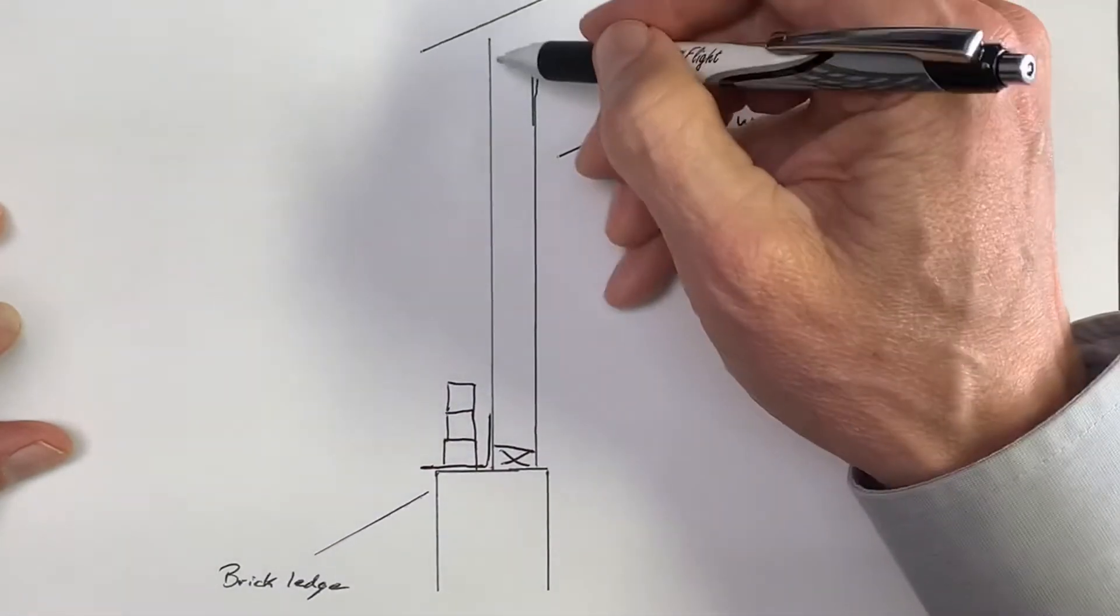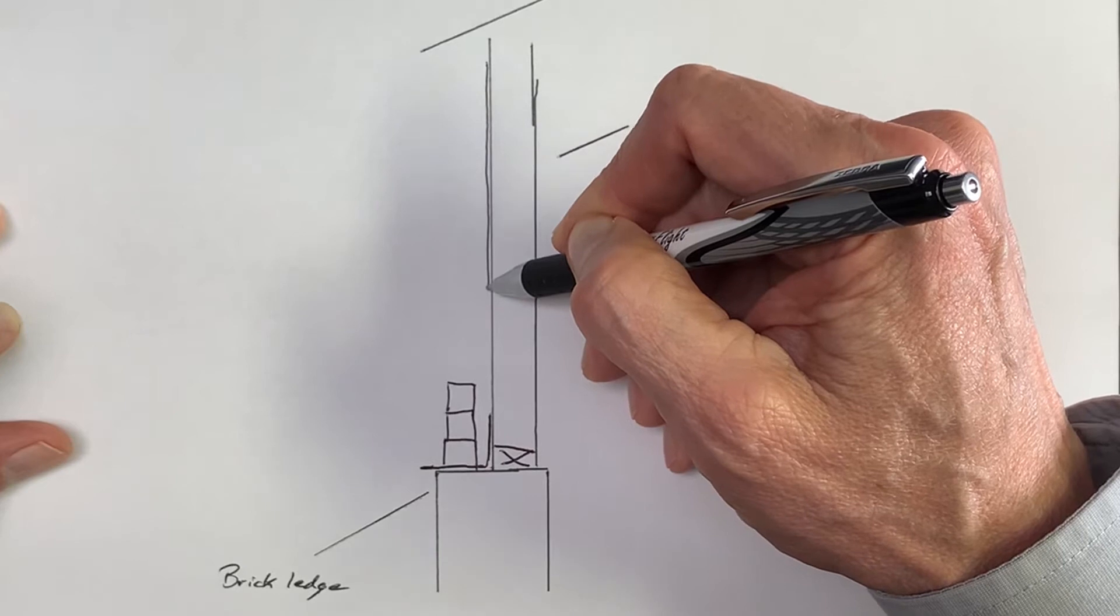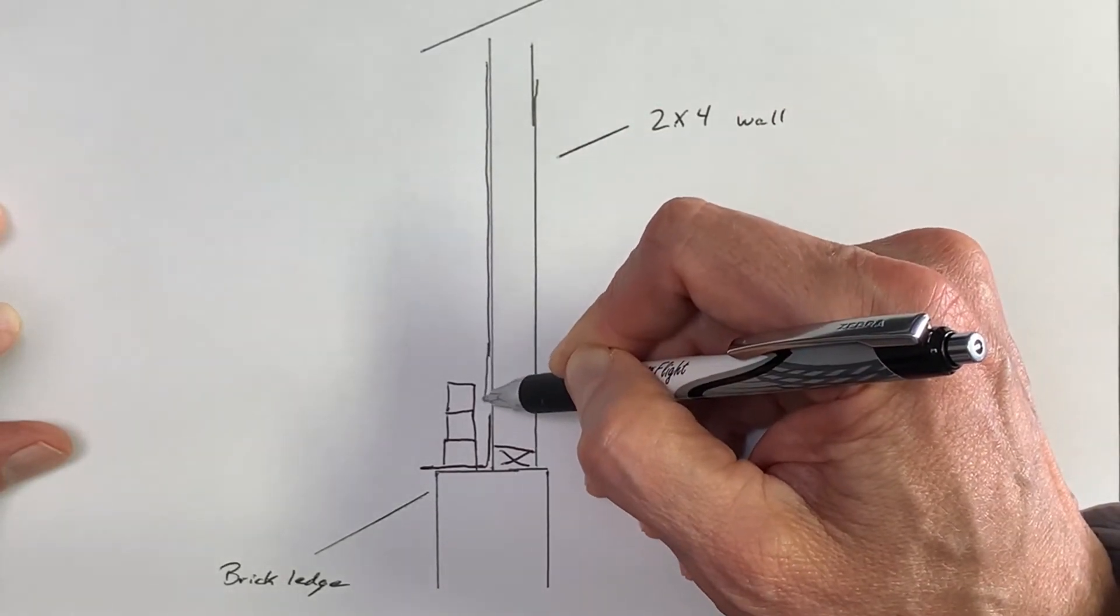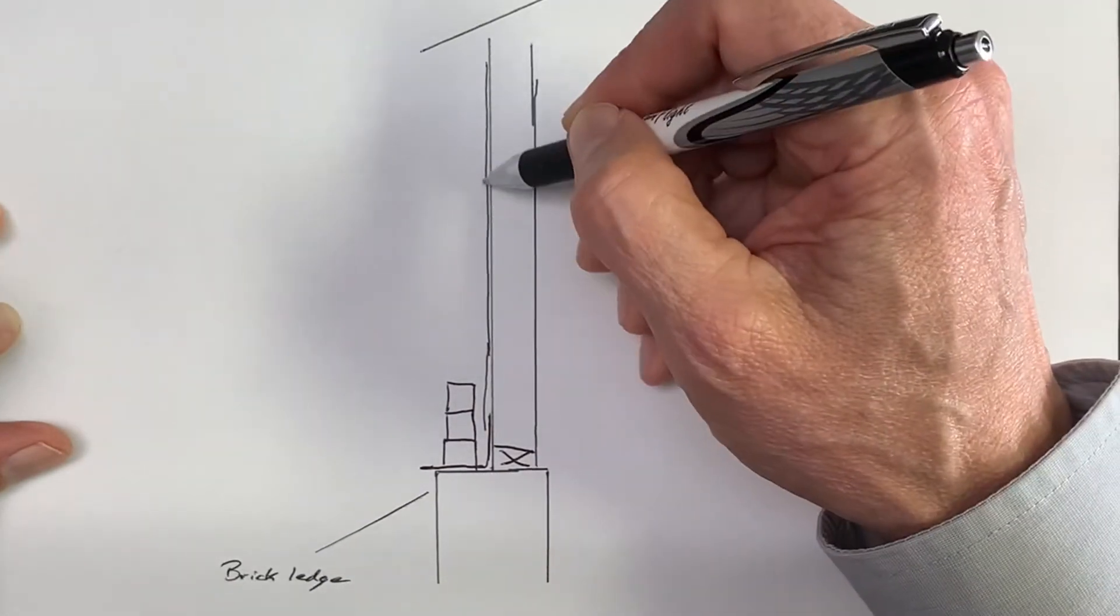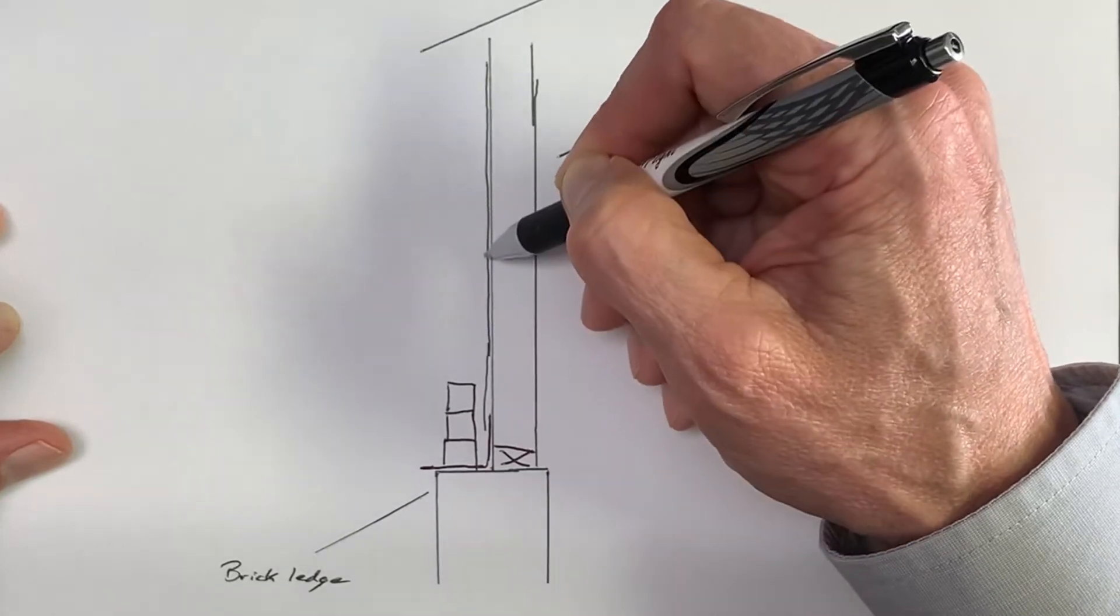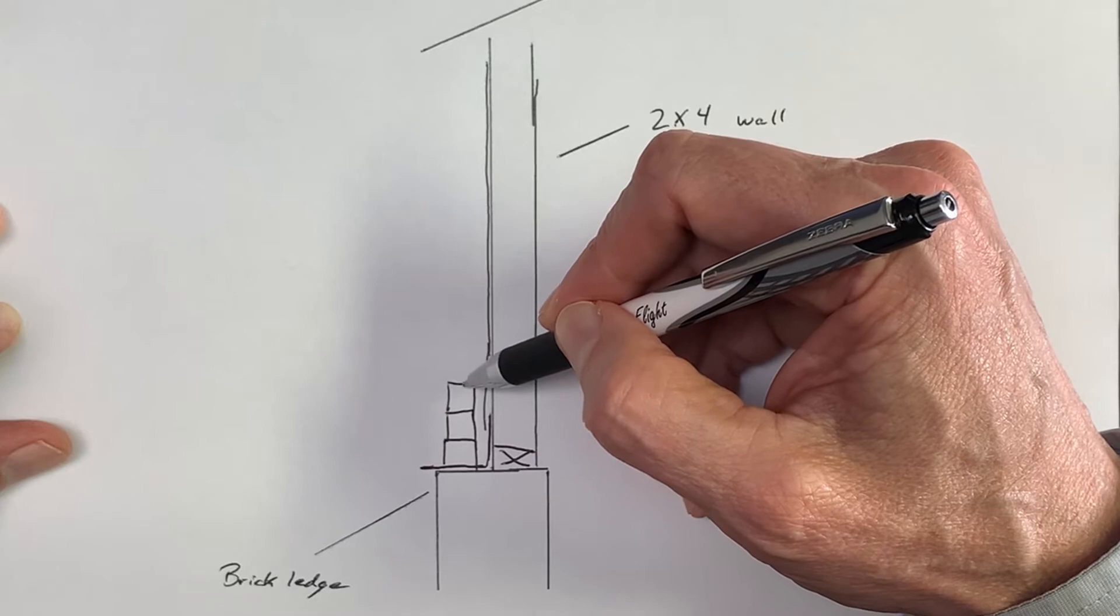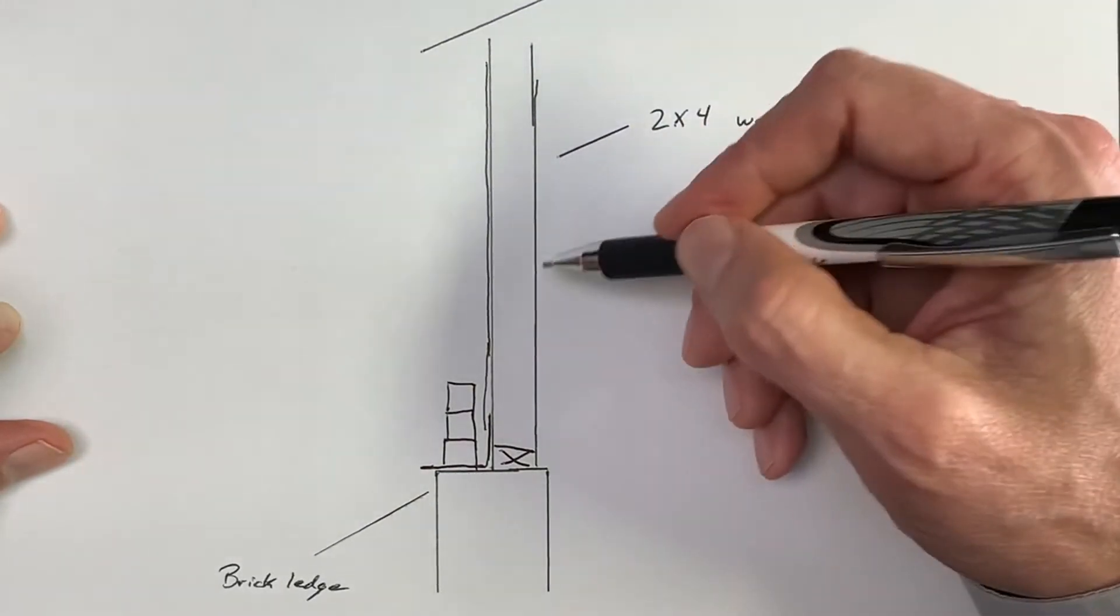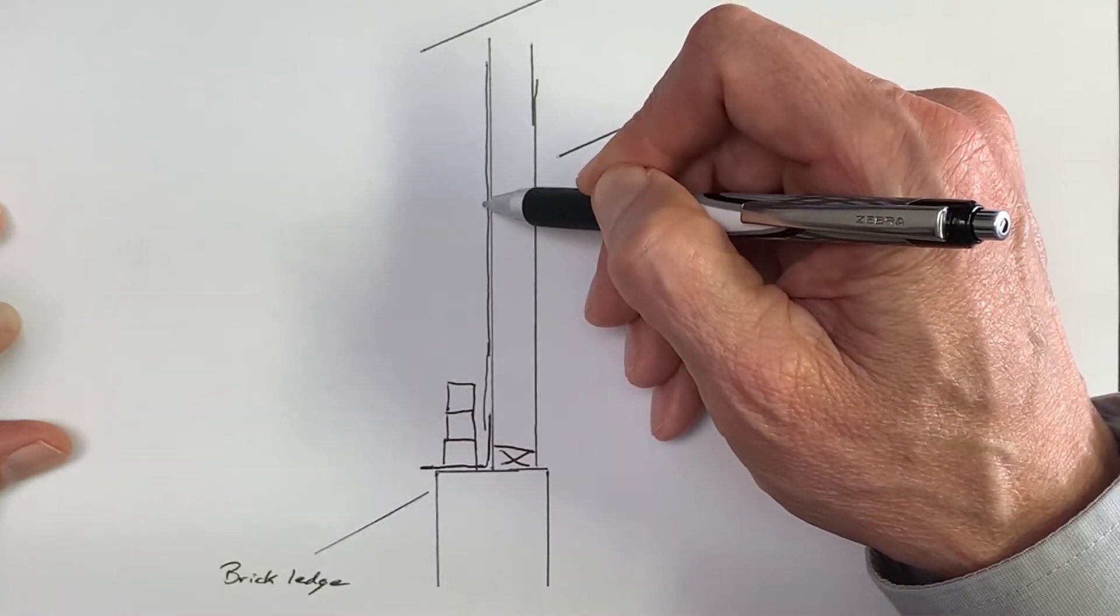And again, in another video, you saw the tie back or house wrap that covers the 2x4 wall, and that will actually go over top of this base flashing. So when condensation or water develops back here, which it will, because bricks are masonry and masonry products can hold water and moisture, you'll end up with condensation back here.